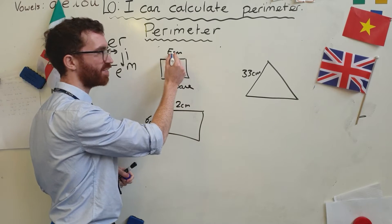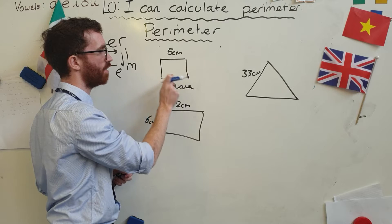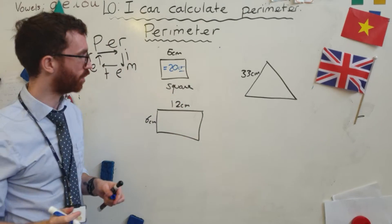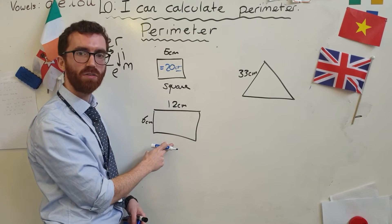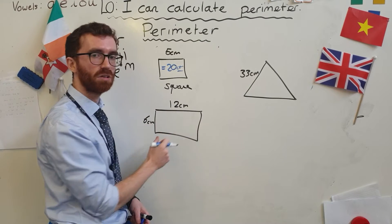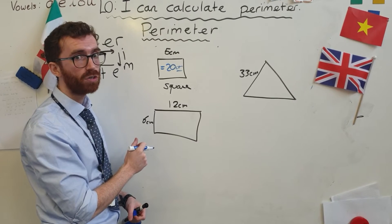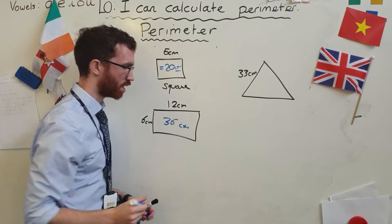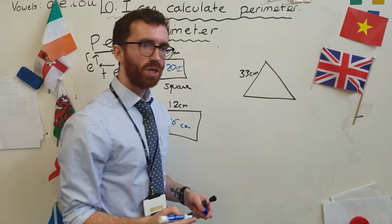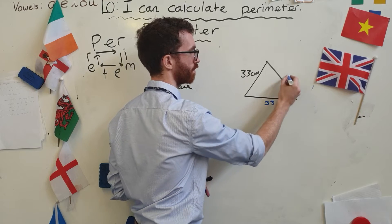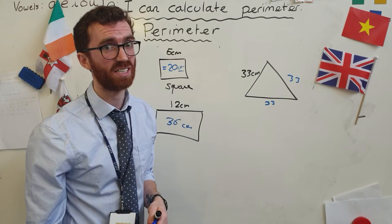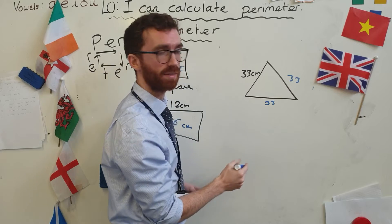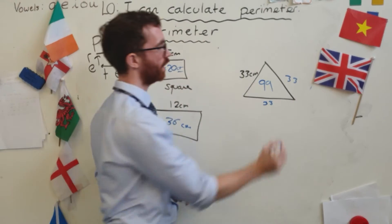If one side of the square is five, each side is five — so five, ten, fifteen, twenty: twenty centimetres. Make sure you've got the unit of measurement. For the rectangle: twelve and twelve is twenty-four; six and six is twelve; twenty-four and twelve is thirty-six centimetres. For the equilateral triangle: thirty-three, thirty-three, and thirty-three — thirty-three and thirty-three is sixty-six, add thirty-three is ninety-nine. That is ninety-nine centimetres.